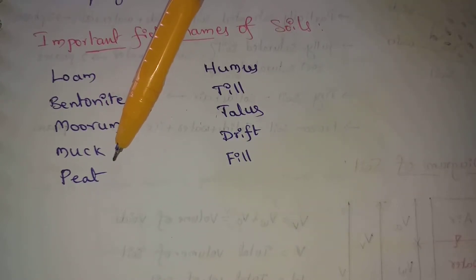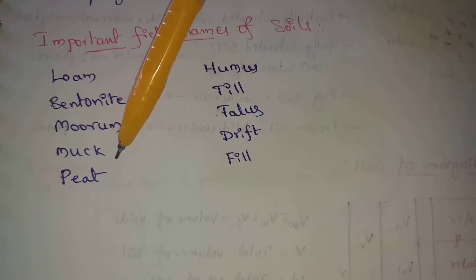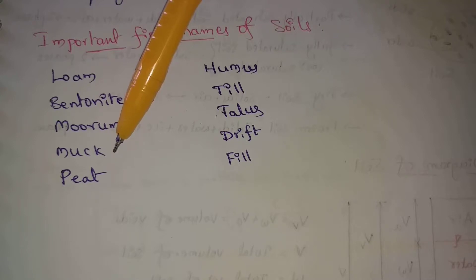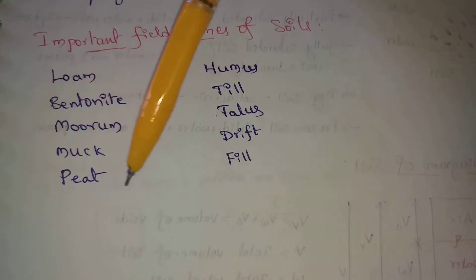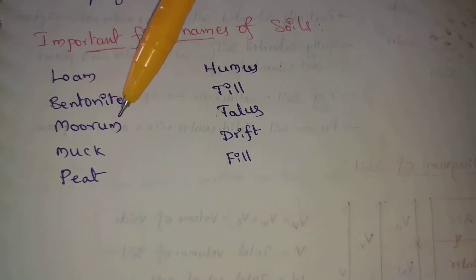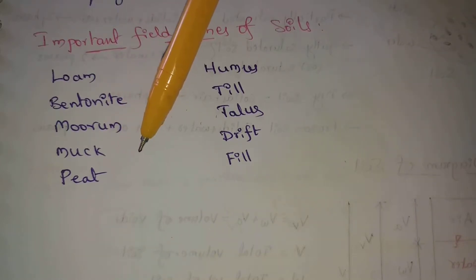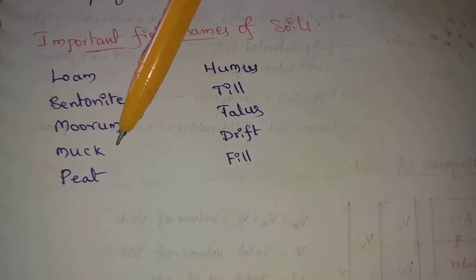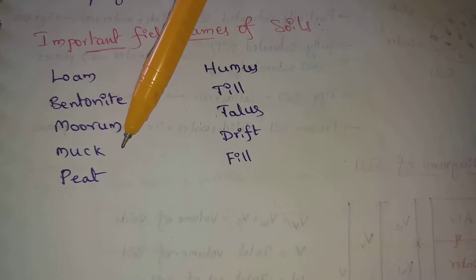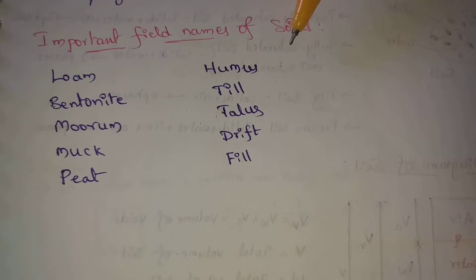Next one, peat. Peat is a highly organic soil of fibrous nature consisting of vegetative matter in varying states of decomposition. Peat is also called as cumulus soils.